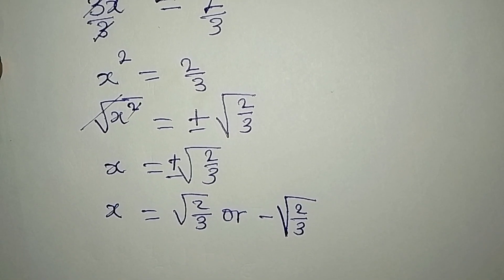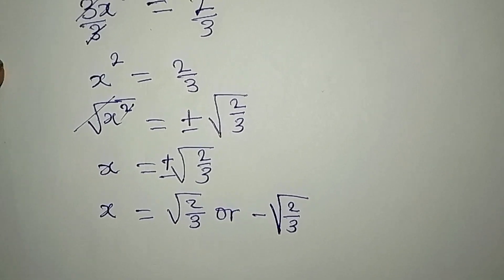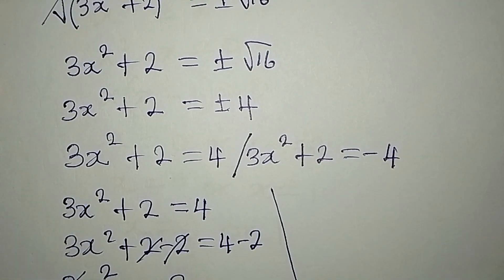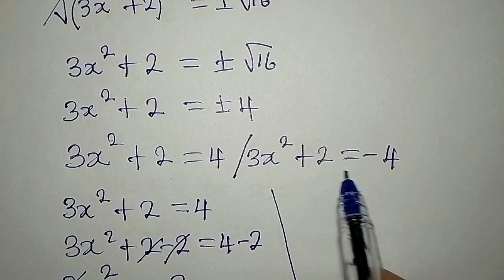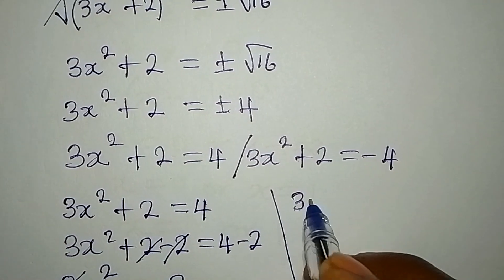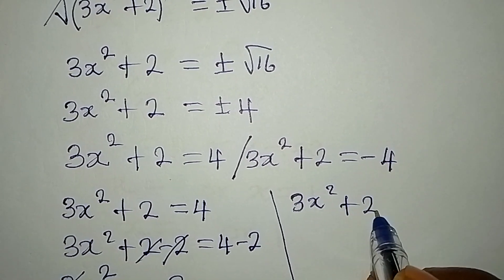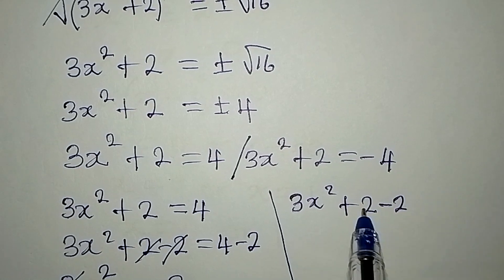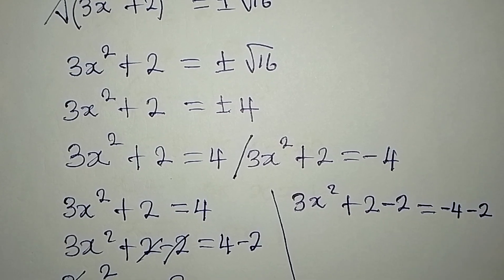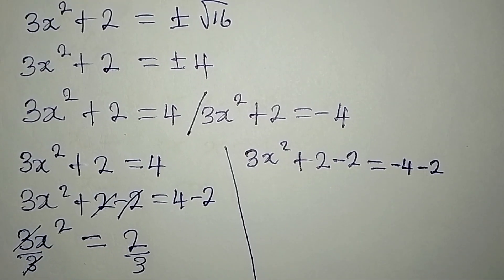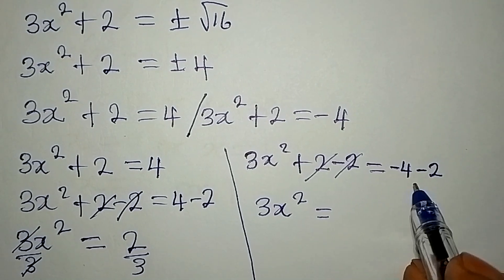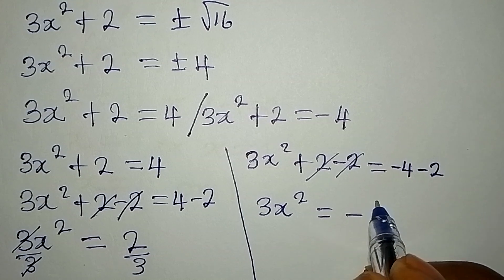We still have the second equation to deal with: 3x squared plus 2 equals negative 4. We subtract 2 from both sides, so on the right we have negative 4 minus 2. The 2s cancel, giving us 3x squared equals negative 4 minus 2, which equals negative 6.